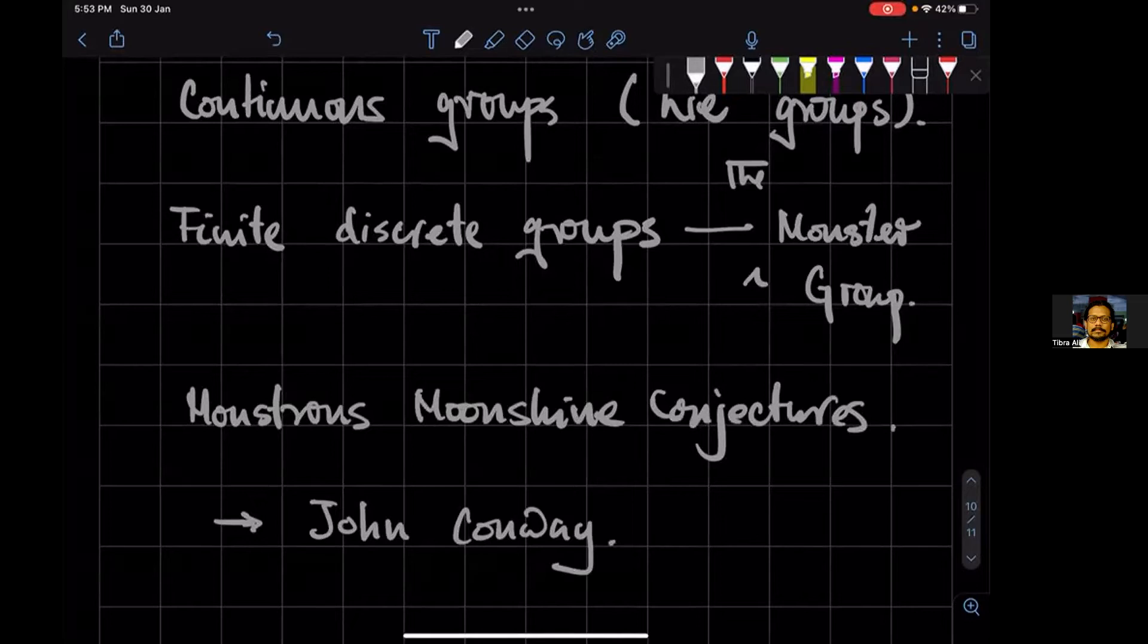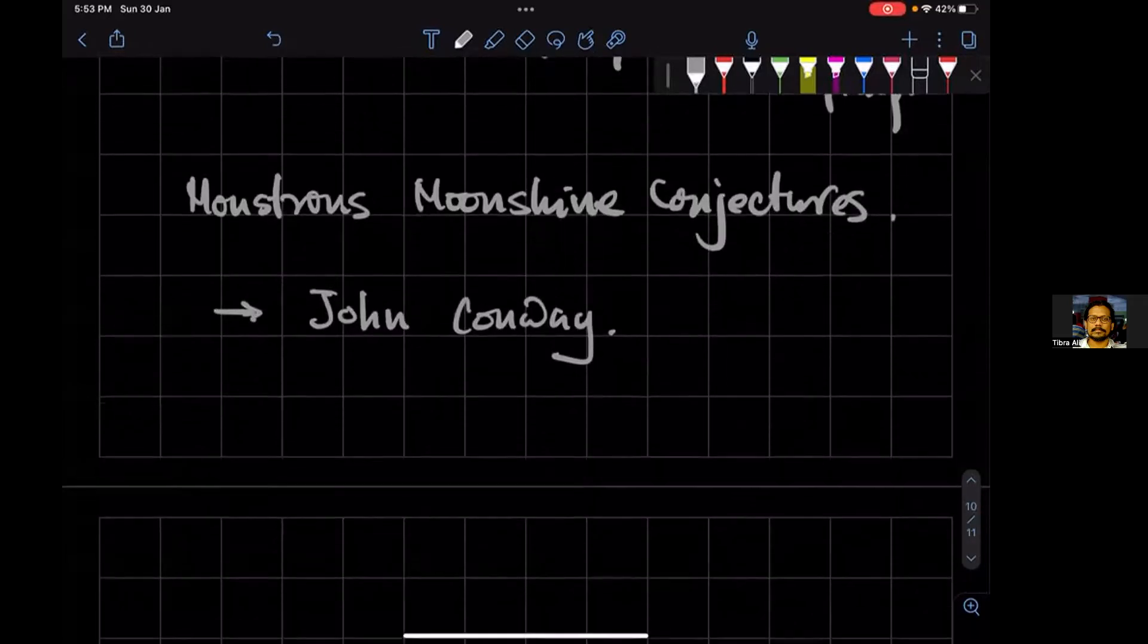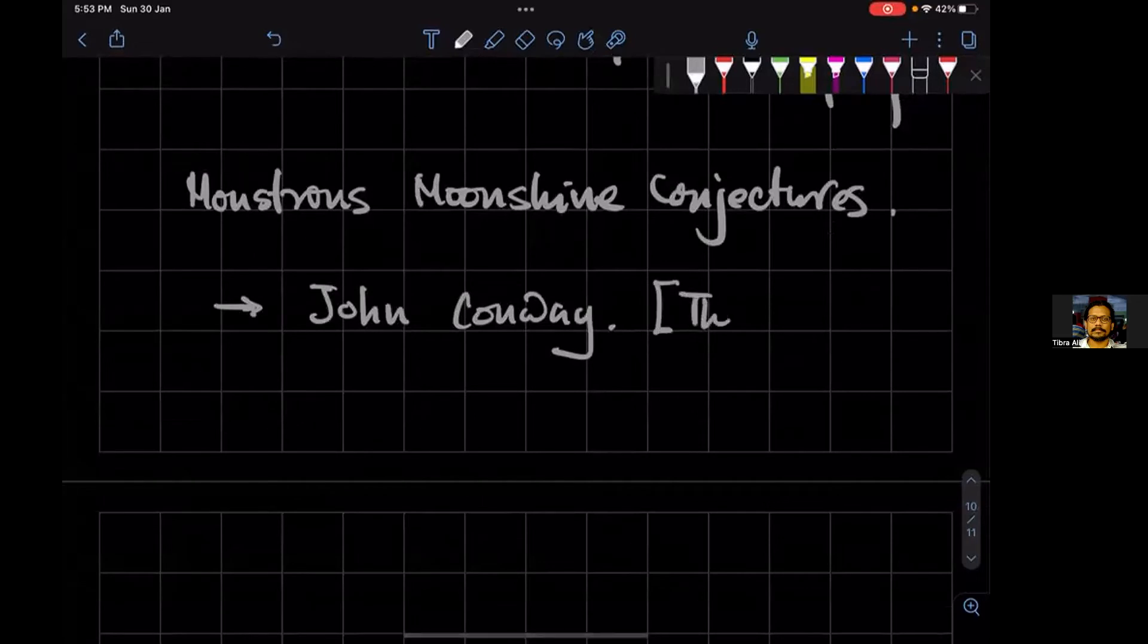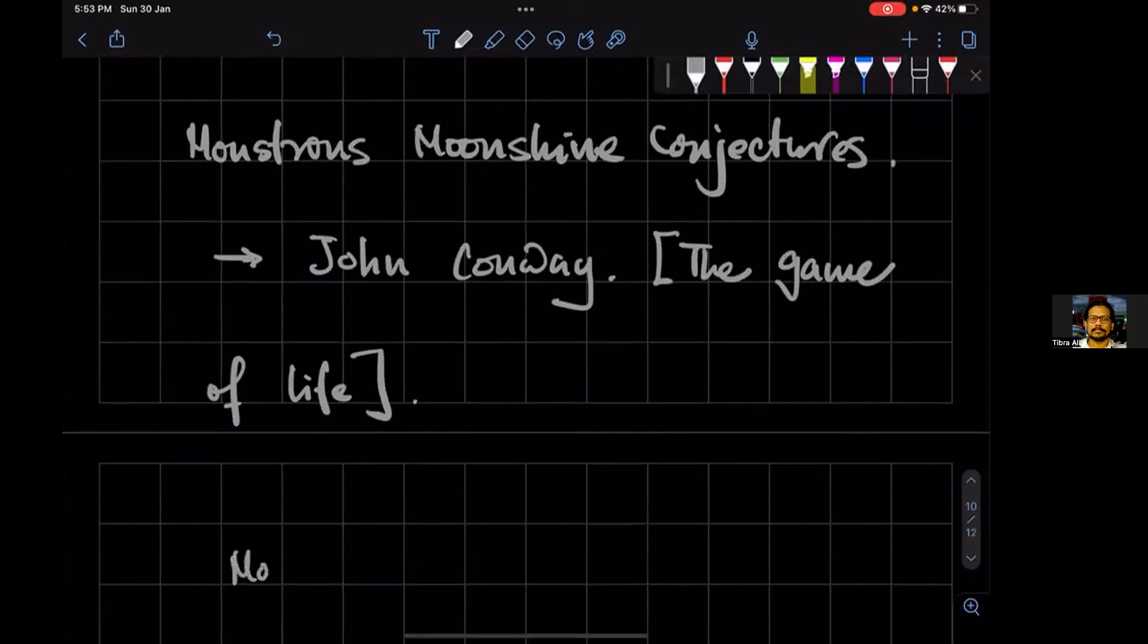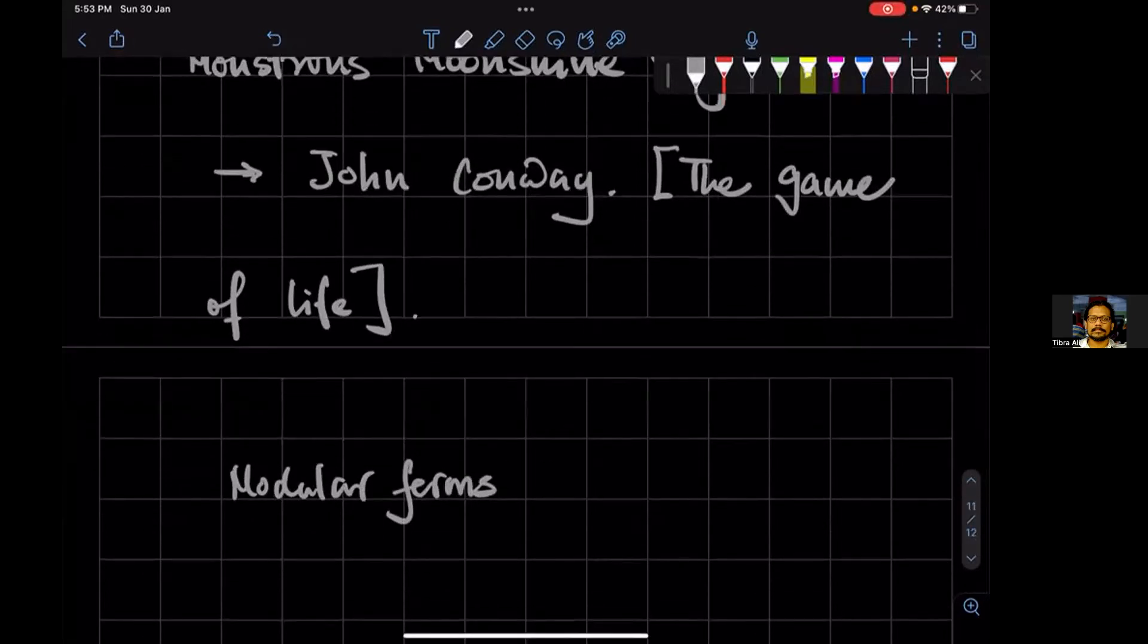And John Conway died I think a couple of years ago - I think he died of COVID - and he was just this very amazing... like he was just a very great mathematician and a funny man. You may know of the game of life, which is not a computer program, it's a game, it's what is known as a cellular automaton. So he invented the game of life but he also made the conjecture that modular forms furnish a representation of the monster group.